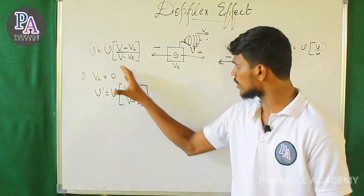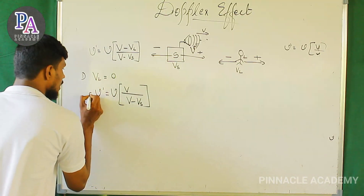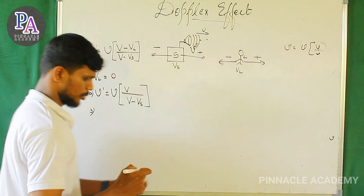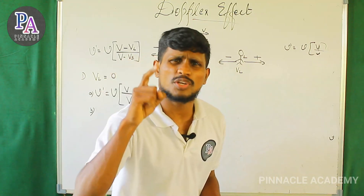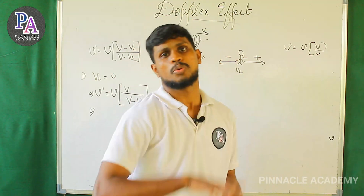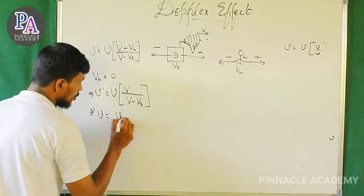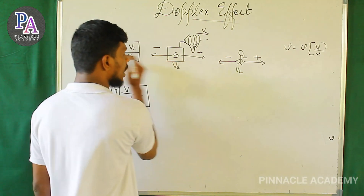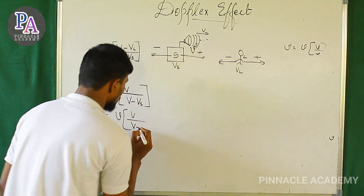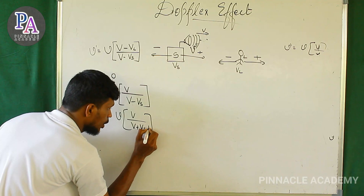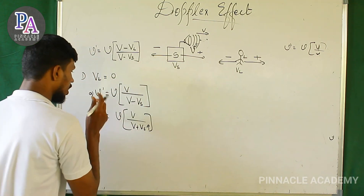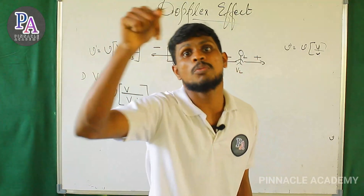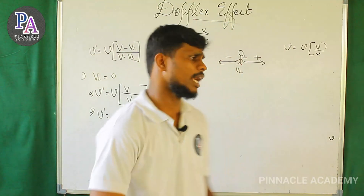Now, if the source is moving away from the listener, and the listener is at rest, new-dash equals new into V divided by (V plus Vs) — because away means negative Vs, so minus minus gives plus. The denominator increases, and therefore the frequency decreases when the source moves away from the listener.